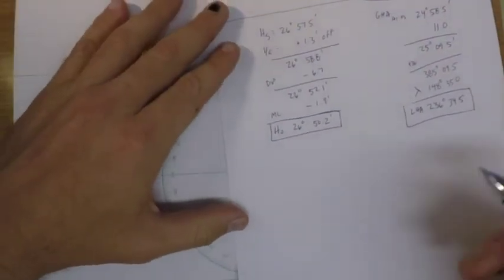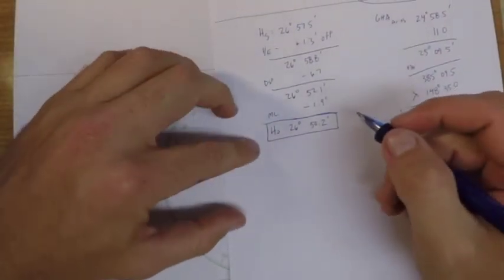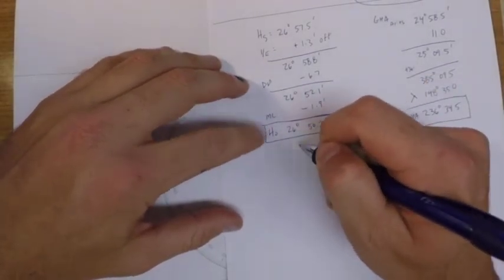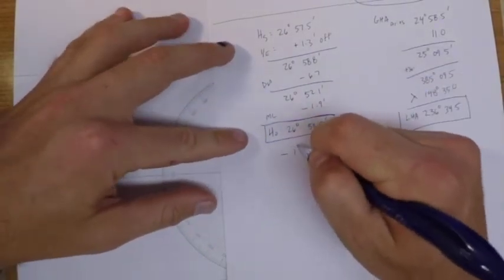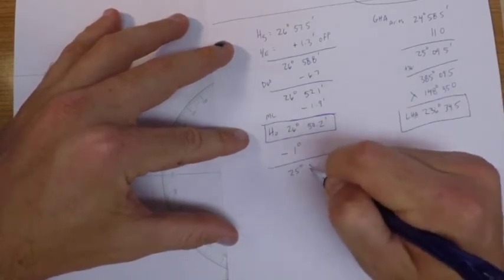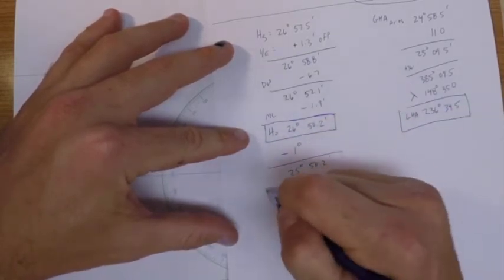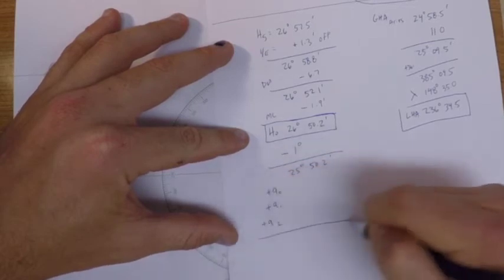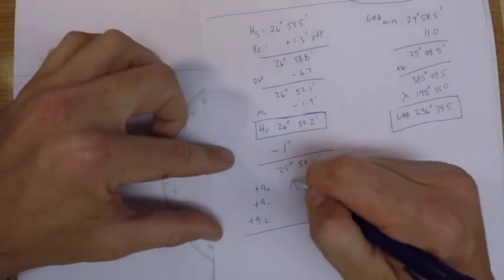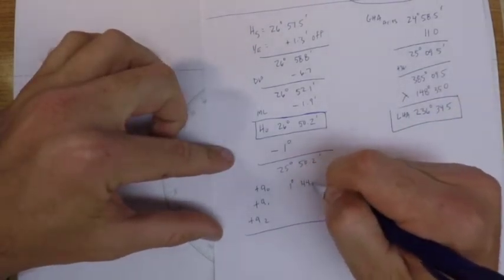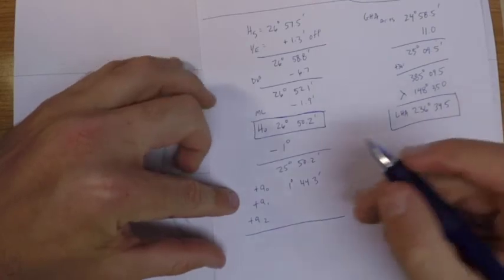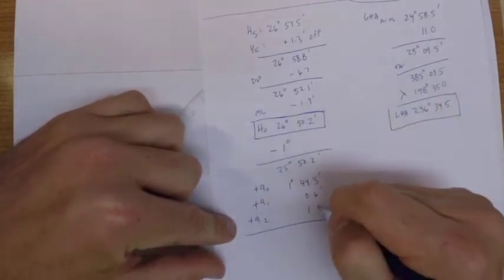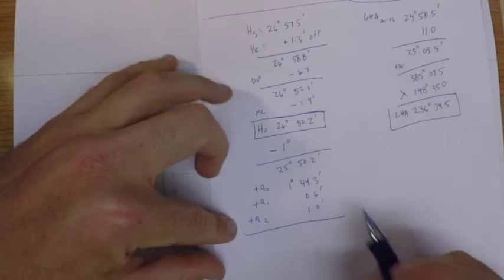So the formula was corrected altitude minus one degree, let's just do that first, plus three corrections. We said a zero correction was 1 44.3, the a1 correction was 0.6 minutes and the a2 correction was 1.0 minutes.